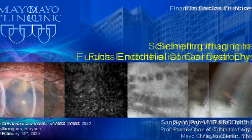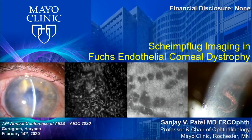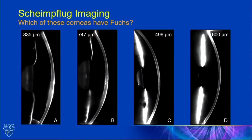This topic is Scheimflug imaging of Fuchs endothelial corneal dystrophy, a condition we see a lot of at Mayo Clinic and do a lot of research on. I have no disclosures. These are Scheimflug images — they look like slit lamp images. The question is, which of these corneas have Fuchs dystrophy? But I'm going to tell you that you cannot make a diagnosis of Fuchs dystrophy just looking at Scheimflug images. So it's a trick question.